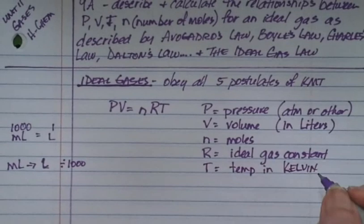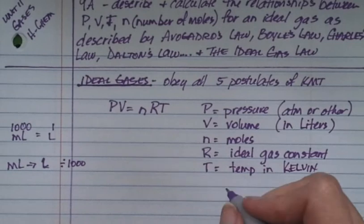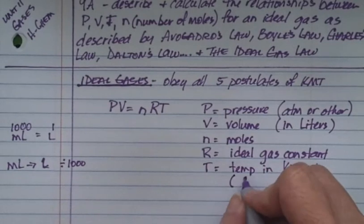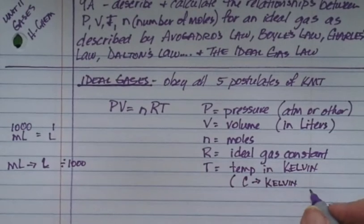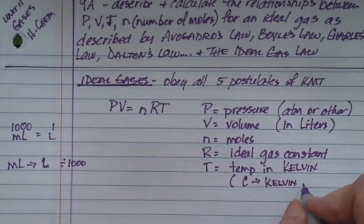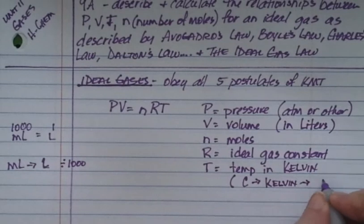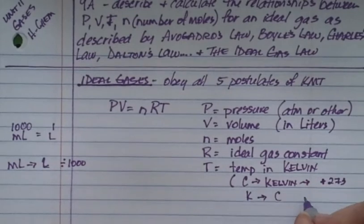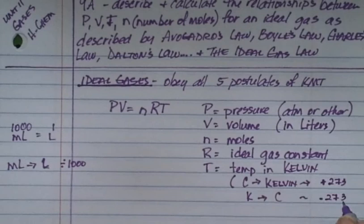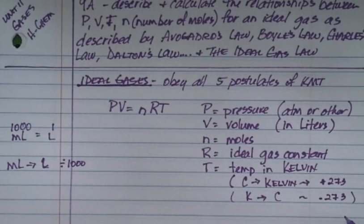So, Kelvin — how do we go from Celsius to Kelvin? It is really, really simple. Celsius to Kelvin: if I have zero degrees Celsius, I need to add 273. If I'm going from Kelvin to Celsius, I subtract 273. So if we're looking at absolute zero — zero degrees Kelvin — that's negative 273 Celsius.